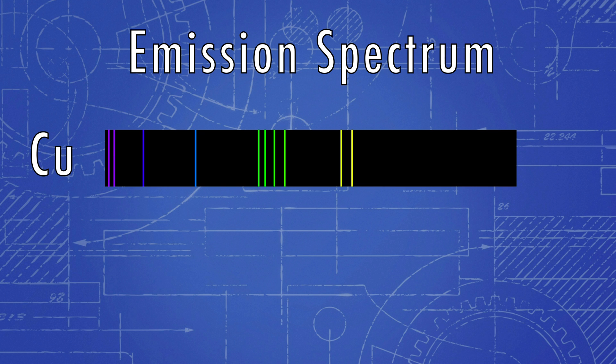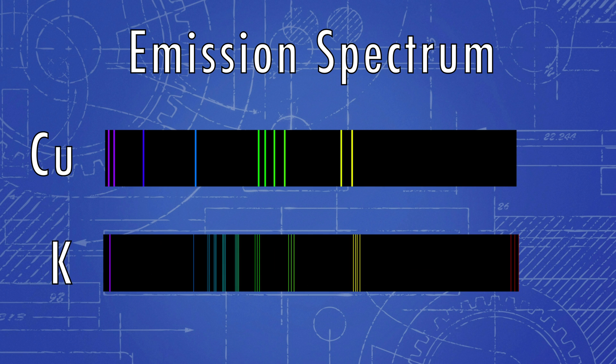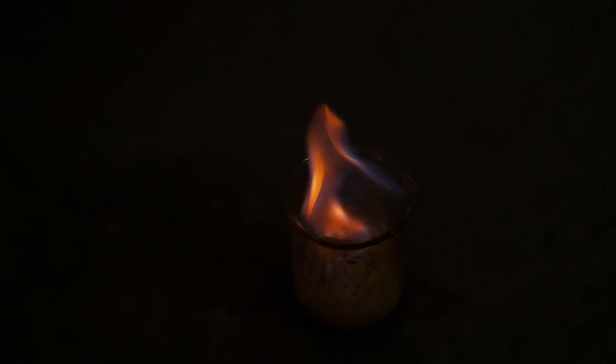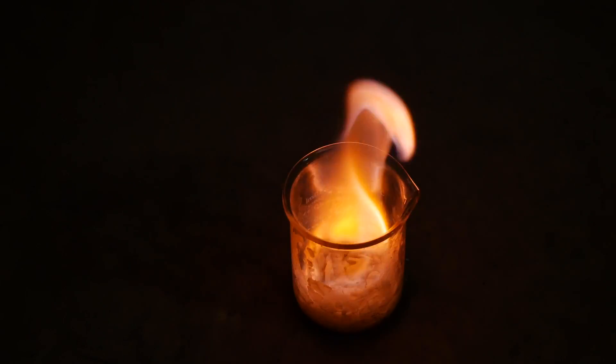However, if we look at potassium's emission spectrum, we see that purple is the most dominant wavelength, and if I burn some potassium hydroxide, we see a purple flame. Since every element has a very distinct emission spectrum, sort of like a fingerprint, scientists can look at the light emitted from a different star or planet from far away and work backwards to figure out what elements it's made of and at what proportions.